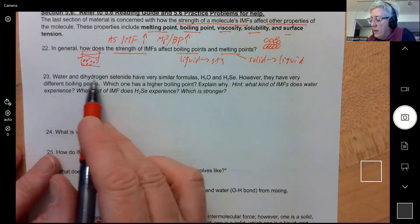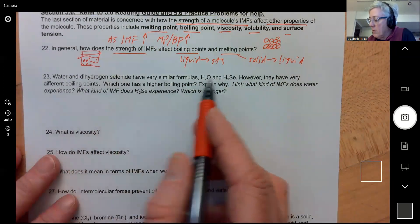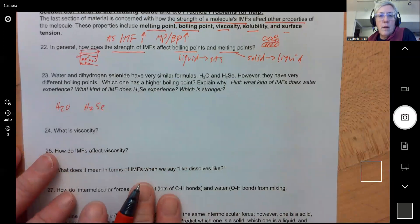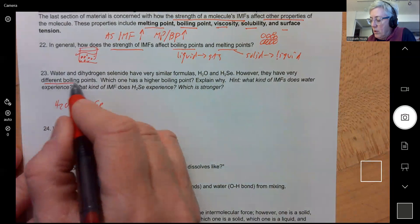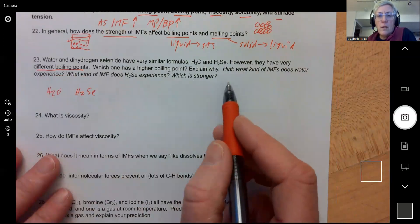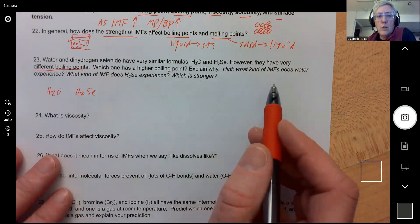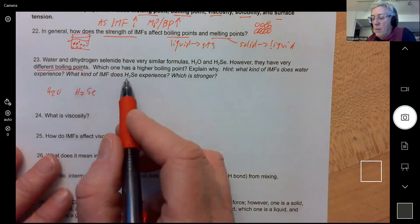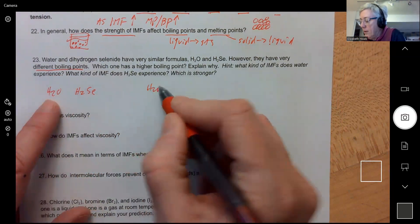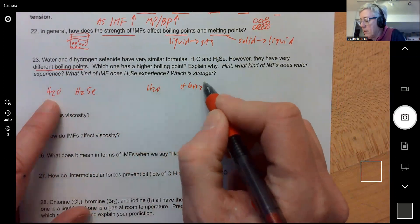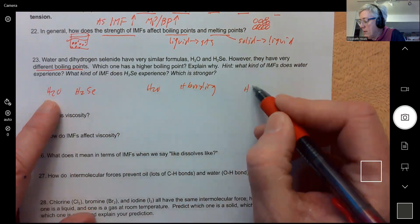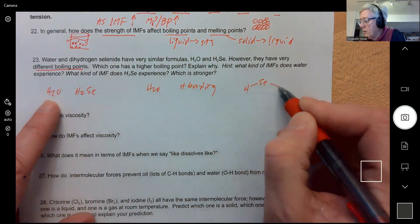Question 23: Water and dihydrogen selenide have very similar formulas, H2O and H2SE. However, they have very different boiling points. Which one has a higher boiling point? And I gave you a hint: What kind of IMF does water experience? What kind of IMF does H2SE experience and which is stronger? Well, water has hydrogen bonding, which is the strongest.